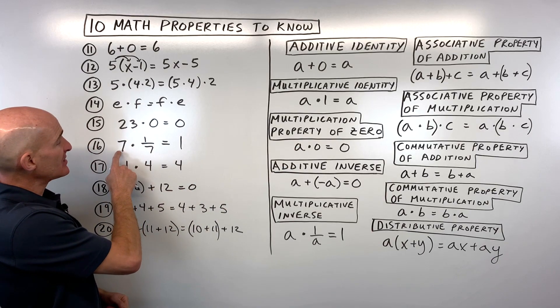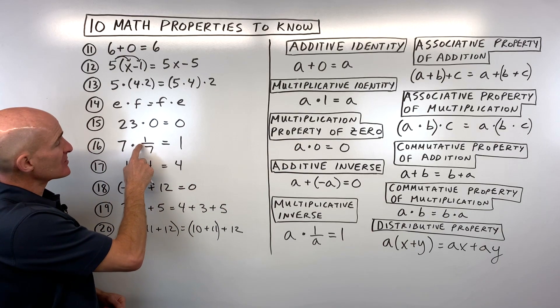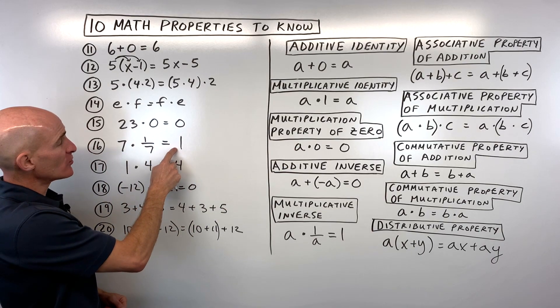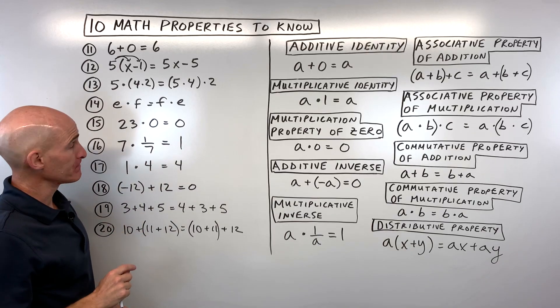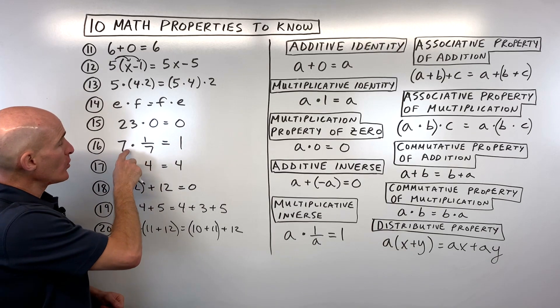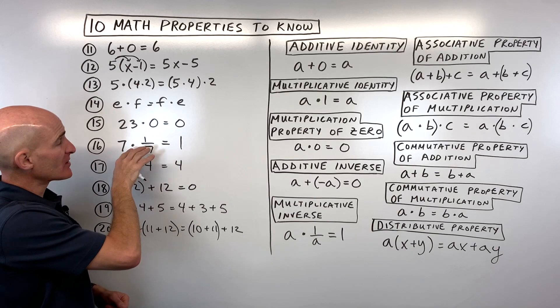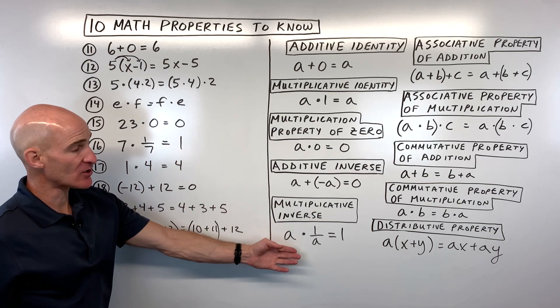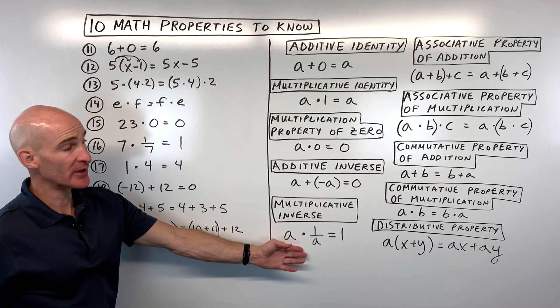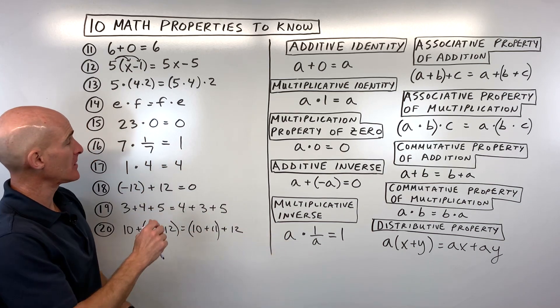Number 16: seven times one-seventh equals one. When you multiply a number times its reciprocal, you always get one — that's the multiplicative inverse.